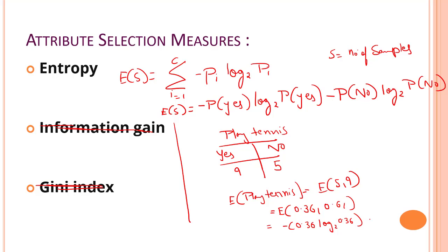And if you solve it, we will be getting somewhere around 0.95. So that's the entropy of this scenario. We are going to find it out for each and every attribute.